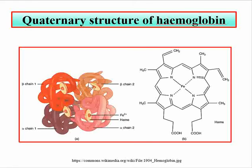Each of the four subunits — first monomer, second monomer, third monomer, and fourth monomer — together form this tetramer kind of structure.